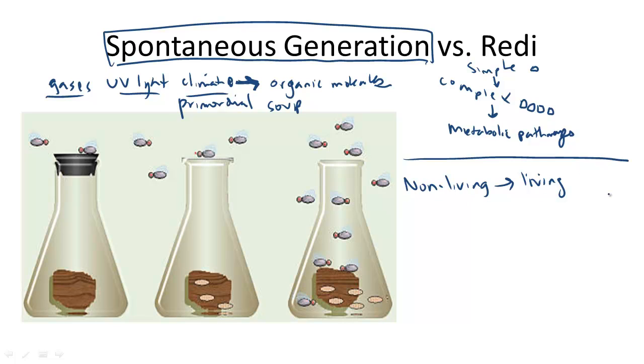A few key scientists tested this idea. First, Francisco Redi. Okay, this guy up here. He's an Italian scientist, who in 1668 disproved the idea that flies could spontaneously transform from rotting meat, as would be suggested by a theory of spontaneous generation.